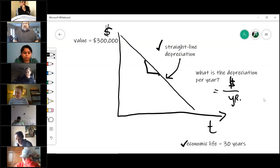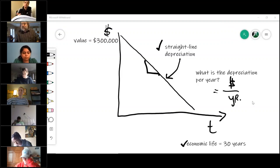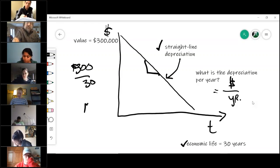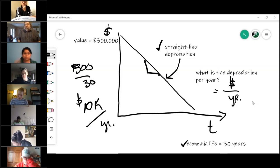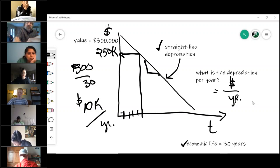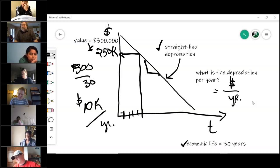So in this specific case, what is the straight-line depreciation of the property? $10,000 exactly. I made easy numbers for everybody—you've got $300,000 divided by 30 years, that's $10,000 of depreciation per year. So if I ask you what is the value of the property five years from today, what would you tell me? What is the property's value five years from today? $250,000 exactly. It would be $250,000.